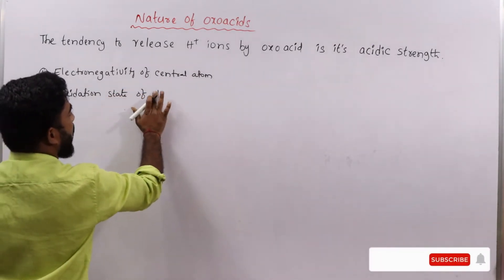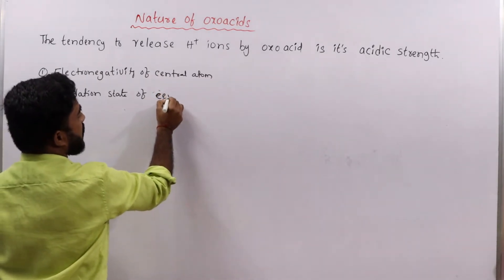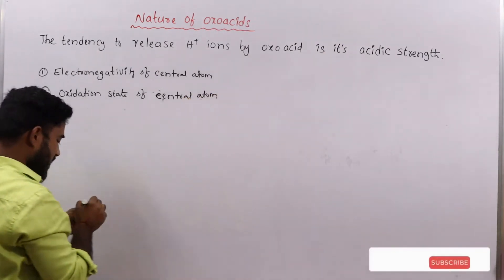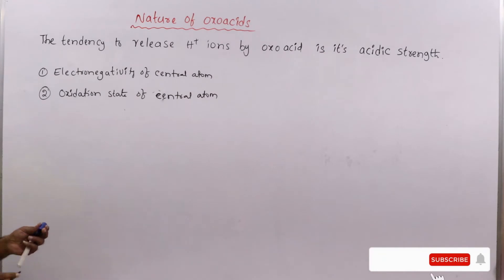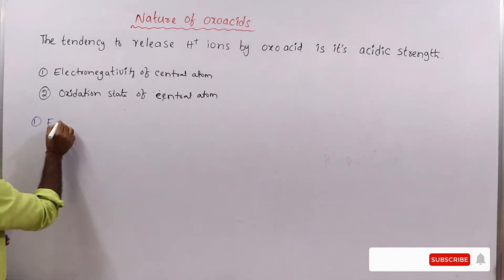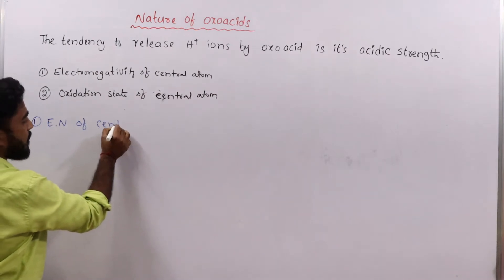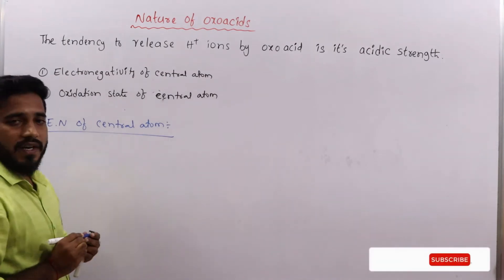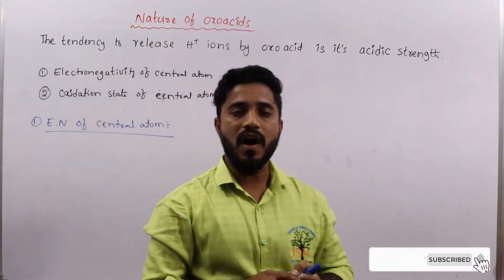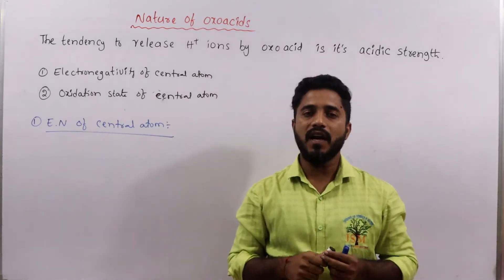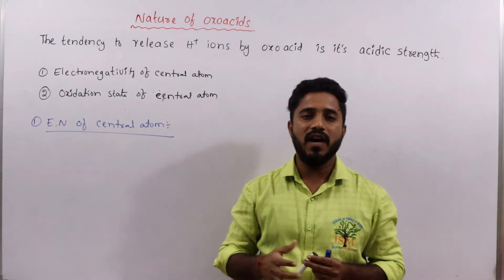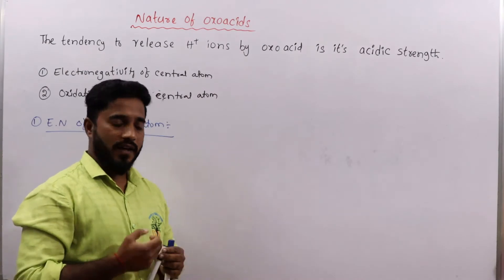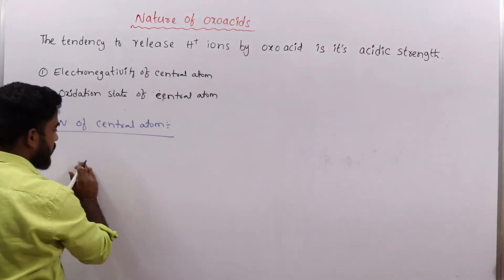These are the two factors which explain the nature of oxo acids. The first factor is the electronegativity of the central atom. If oxo acids are formed with different central atoms, then the acidic strength depends upon the electronegativity of that central atom.